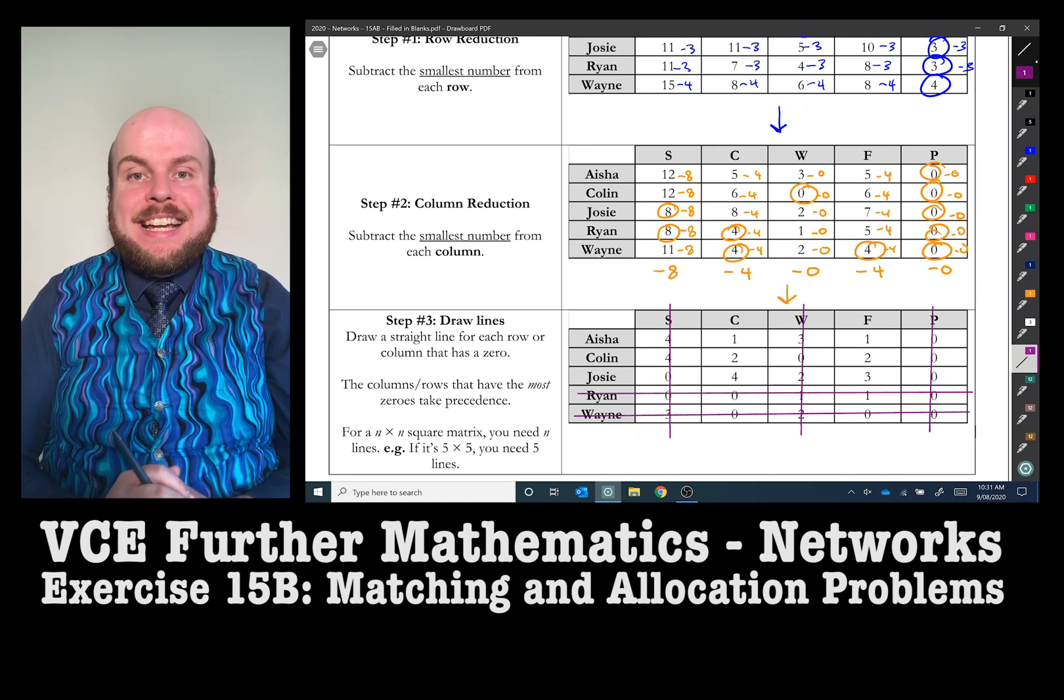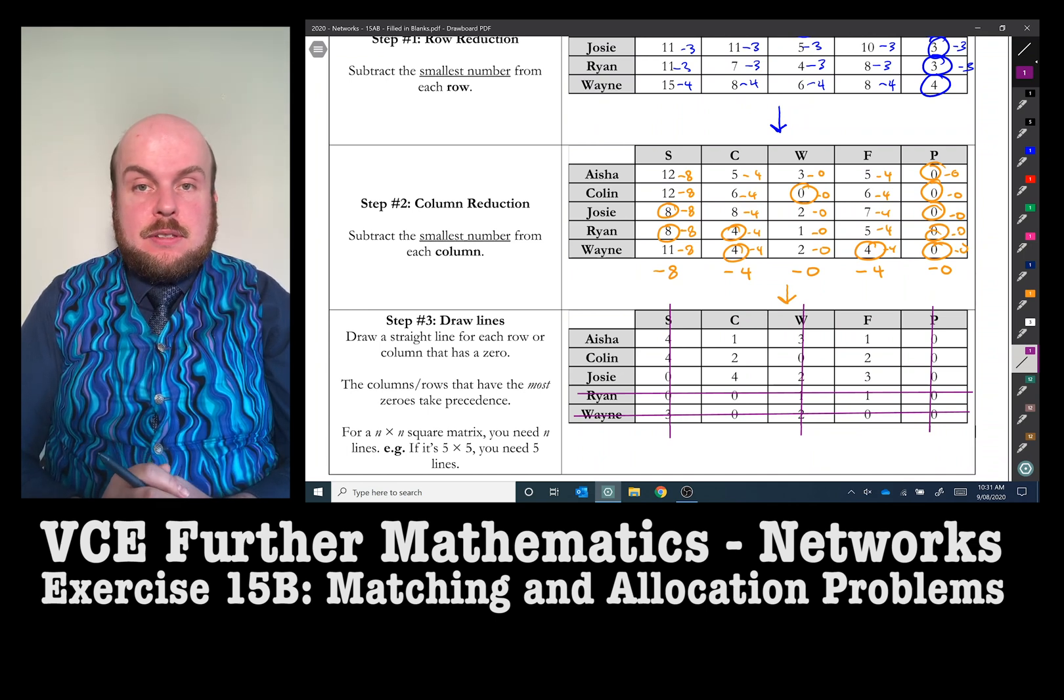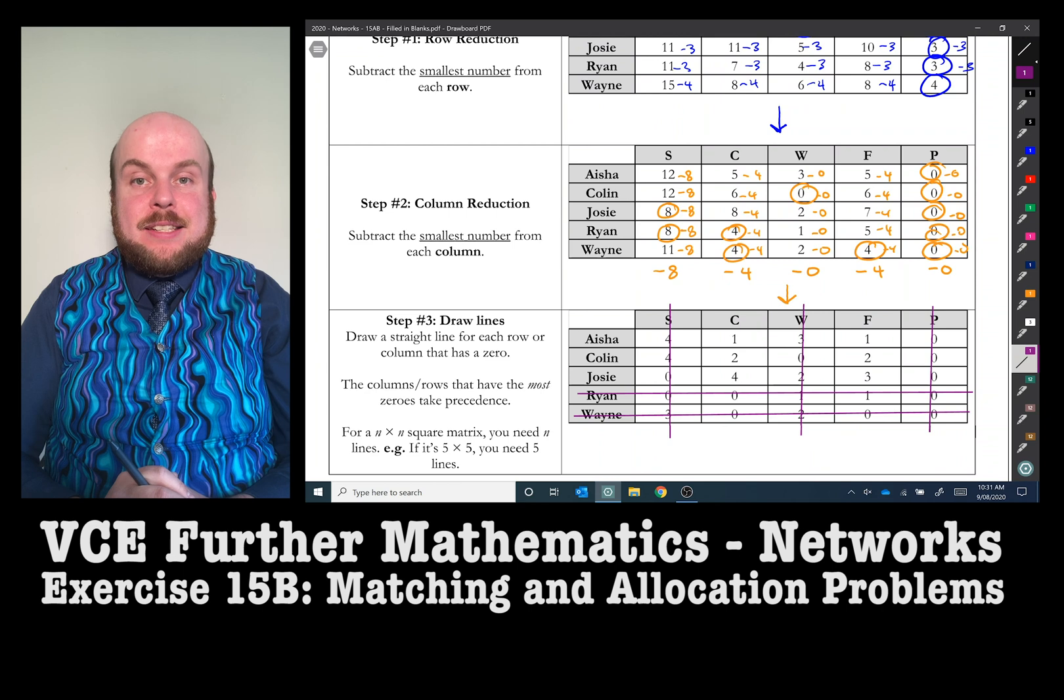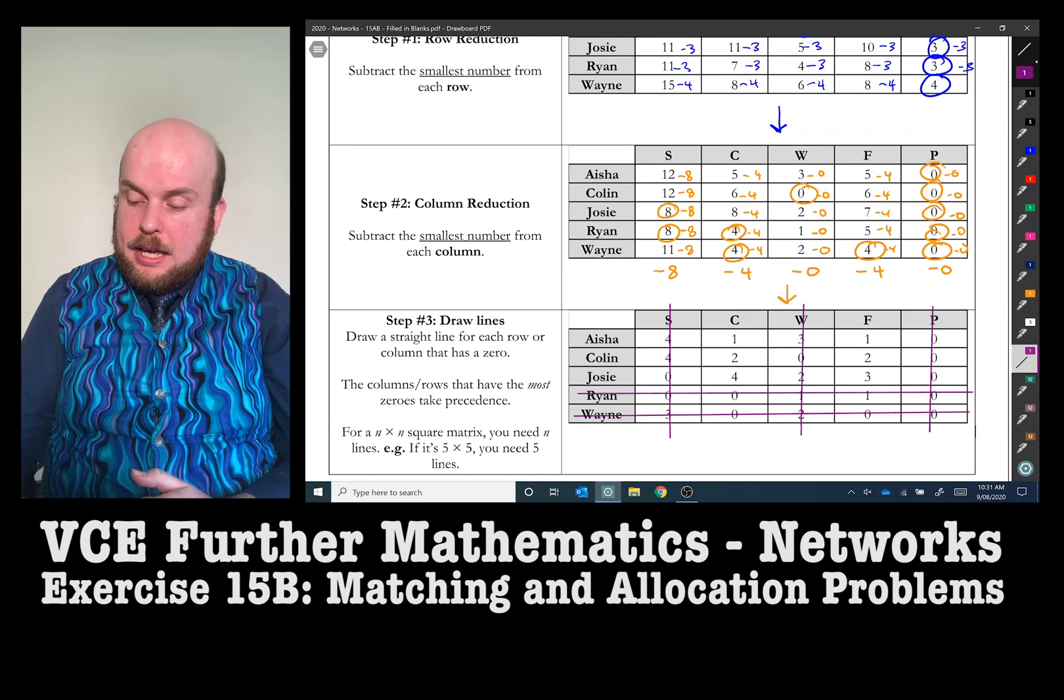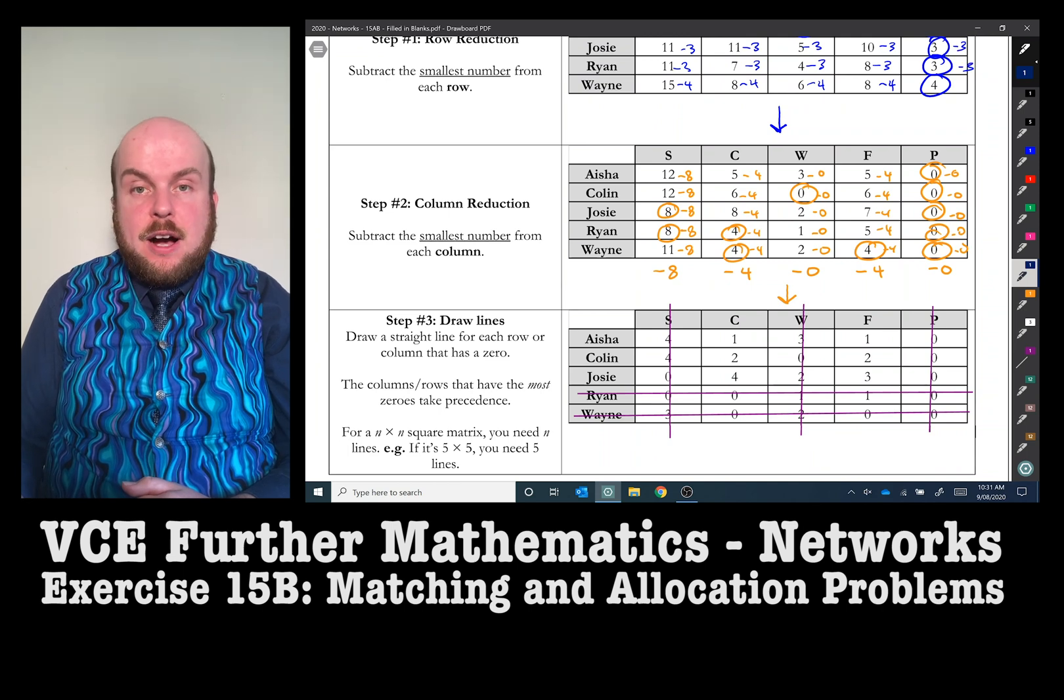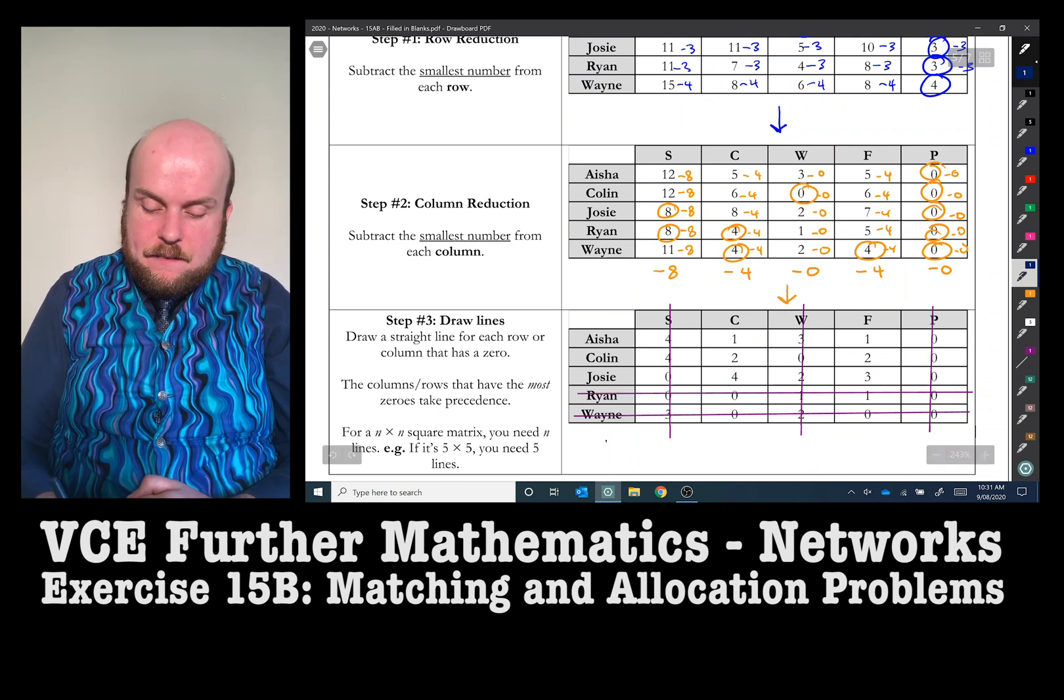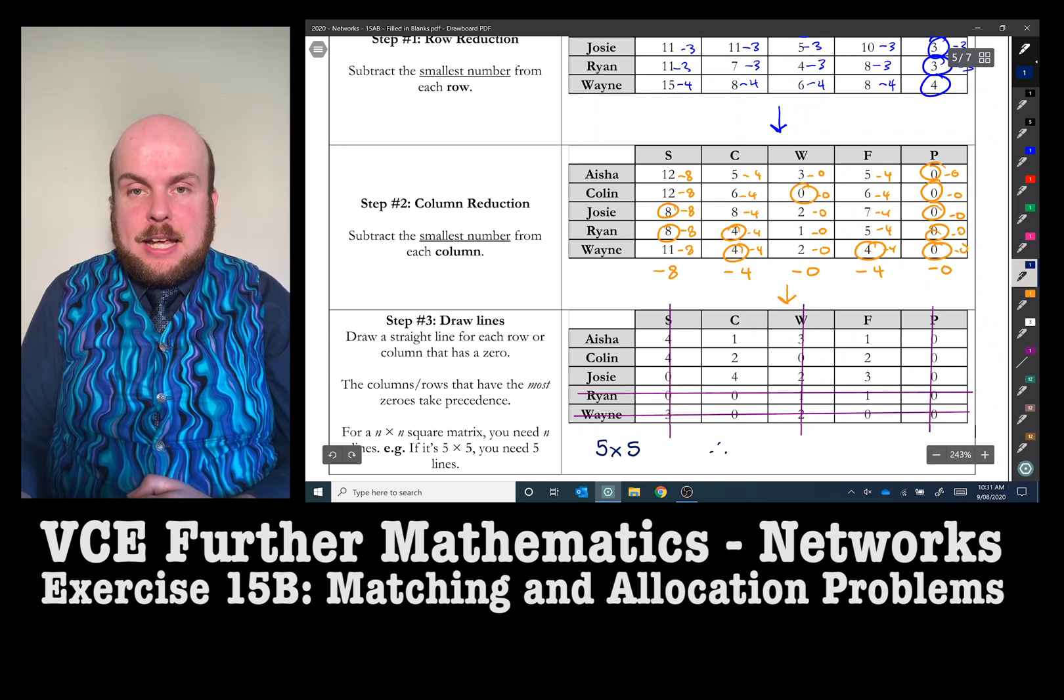I should also stress that when you are determining which rows or columns have the least number of zeros, you want to start with the column or row that has the most zeros and then each of the rows and columns that have the most uncovered zeros. If the number of lines, the least number of lines that you need is equal to the width or height of the matrix, then everything is hunky-dory. Everything is okay. In other words, the fact that I've got one, two, three, four, five lines, and this is a five by five matrix means that I can proceed to the next step.